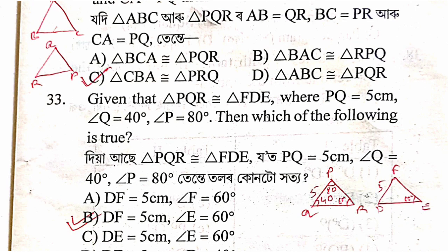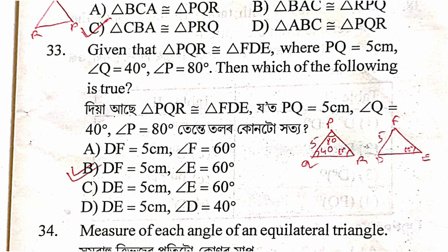Question 33: triangle PQR with FD, where PQ = 5 cm, angle Q = 80 degrees. The solution involves identifying the congruent triangle using SSS or SAS, giving option P2Q.